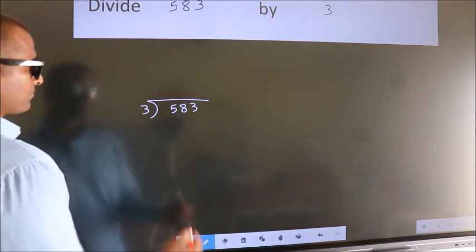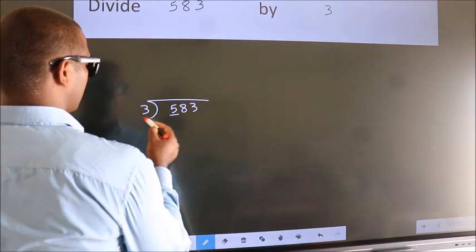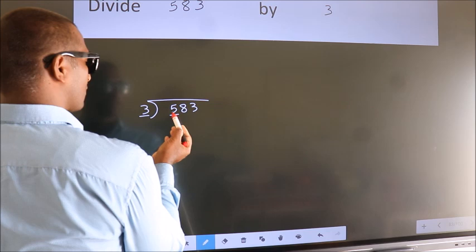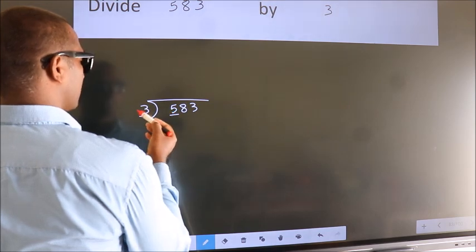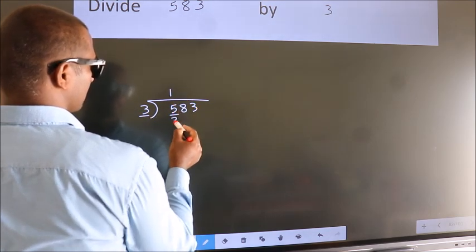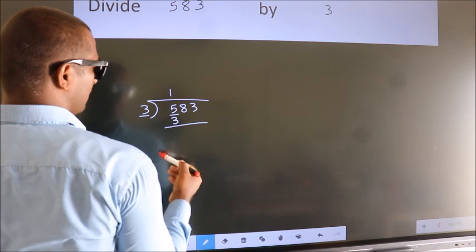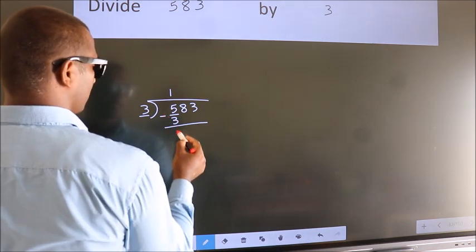Next, here we have 5, here 3. A number close to 5 in the 3 table is 3 once, which is 3. Now we should subtract, we get 2.